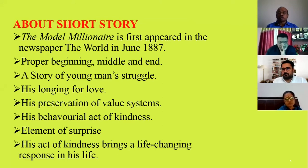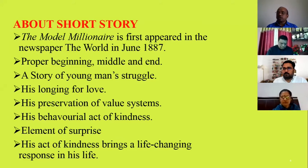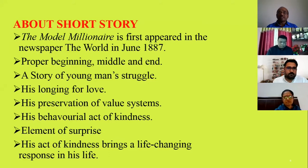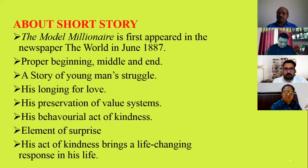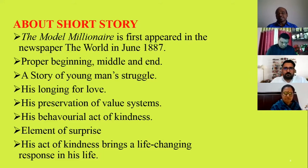'The Model Millionaire' first appeared in the newspaper 'The World' in June 1887 and was republished in 1891. The story has a proper beginning, middle, and end. The opening line is: 'Unless one is wealthy, there is no use of being a charming fellow.' In the middle part, we find the condition put forth by Colonel Martin before Hugh Erskine. And in the end, there is a twist — a cheque of £10,000 received from Baron Hausberg by Hugh Erskine.